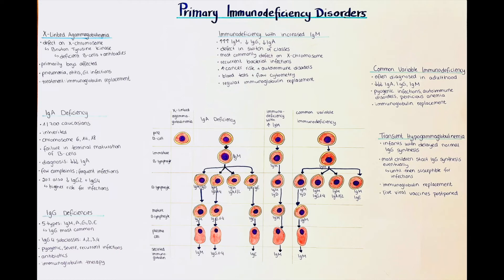What happens is that in these patients, the B cells cannot make the switch from immunoglobulin M to immunoglobulin G and IgE. Normally, in response to an infection, B cells first produce IgM antibodies and then later switch to produce IgG and IgE antibodies, which have different roles. However, here this process is affected and the patient ends up with high IgM and low IgG and IgE.